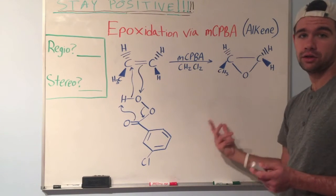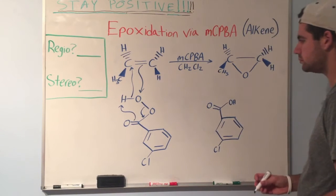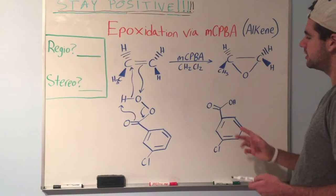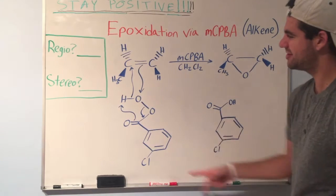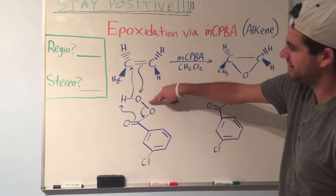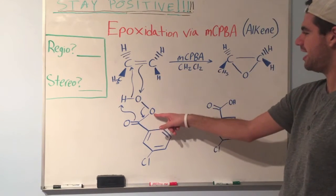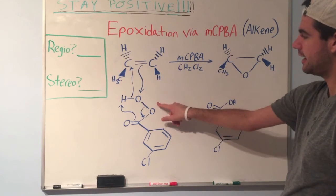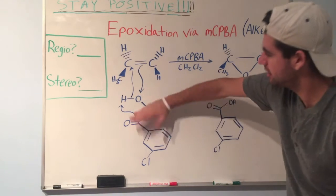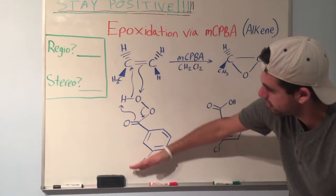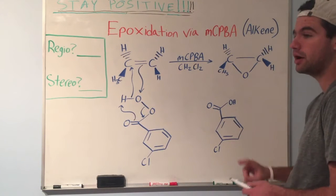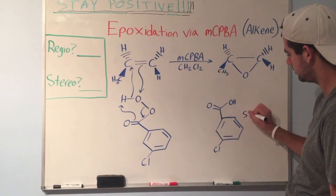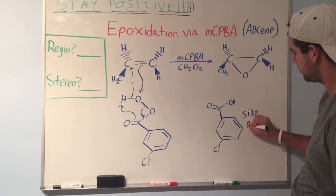So the side product looks like this. You can almost think of it as MCPBA minus this part, right? And you have this oxygen with an added hydrogen now. Other than that, it's basically this part of MCPBA that is the side product.